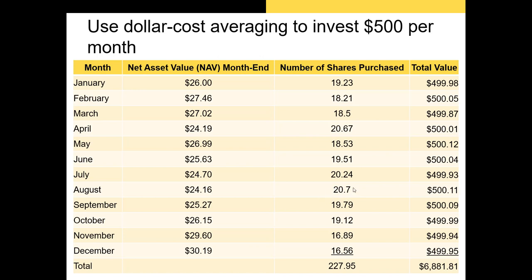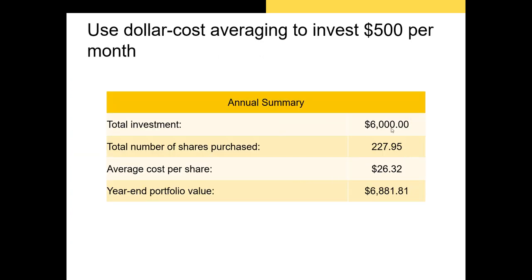The reason dollar cost averaging works is that you're buying fewer shares when the share price is high and more shares when the share price is low. In this example, you've invested $6,000 total — $500 per month for 12 months — purchasing 227 shares at an average cost of $26.32. At the end of the period, those total shares are worth about $6,800.